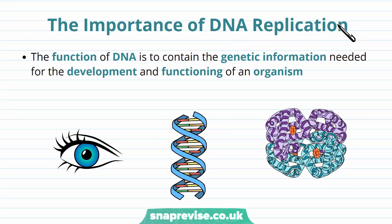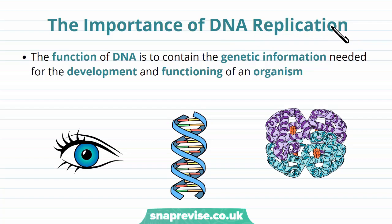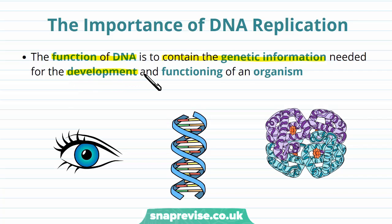Replicating DNA, or making a copy of itself, is a really important process found in all organisms, and it's very important in order to pass on the information that is encoded within it. DNA is a type of molecule found in all cells which contains the genetic information or instructions used to build up the whole organism — its development, growth, and how the organism functions and survives through its life.